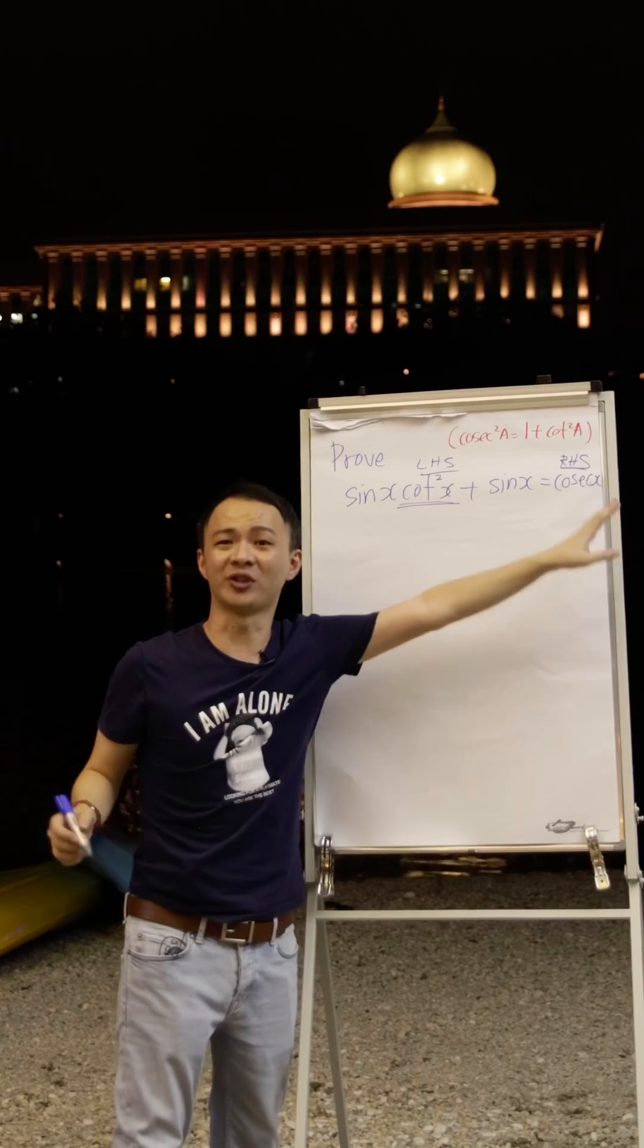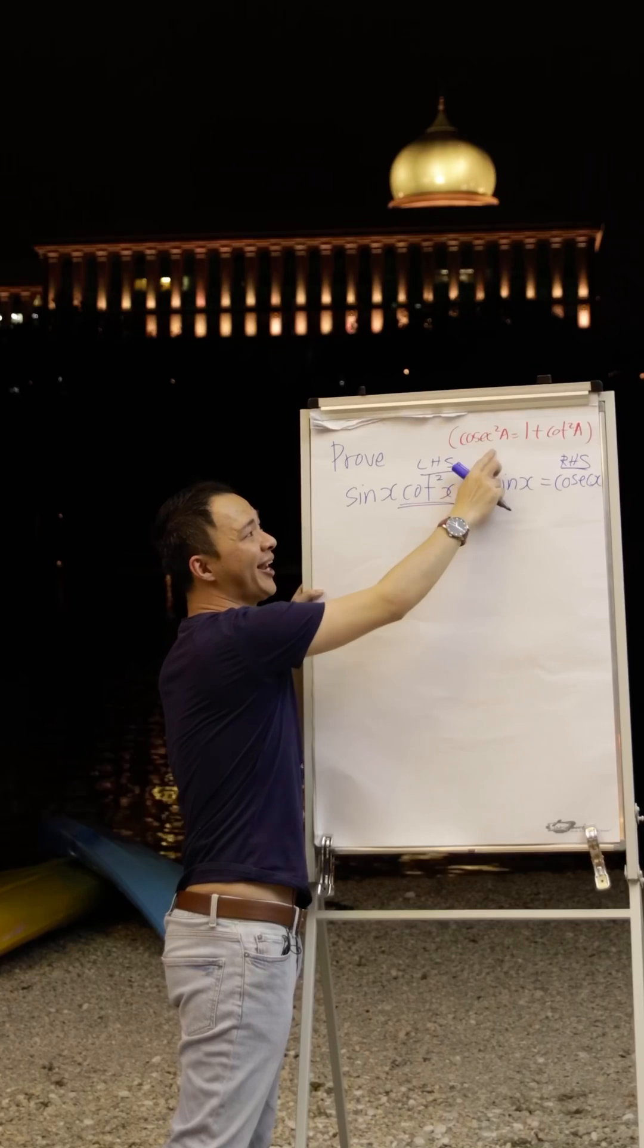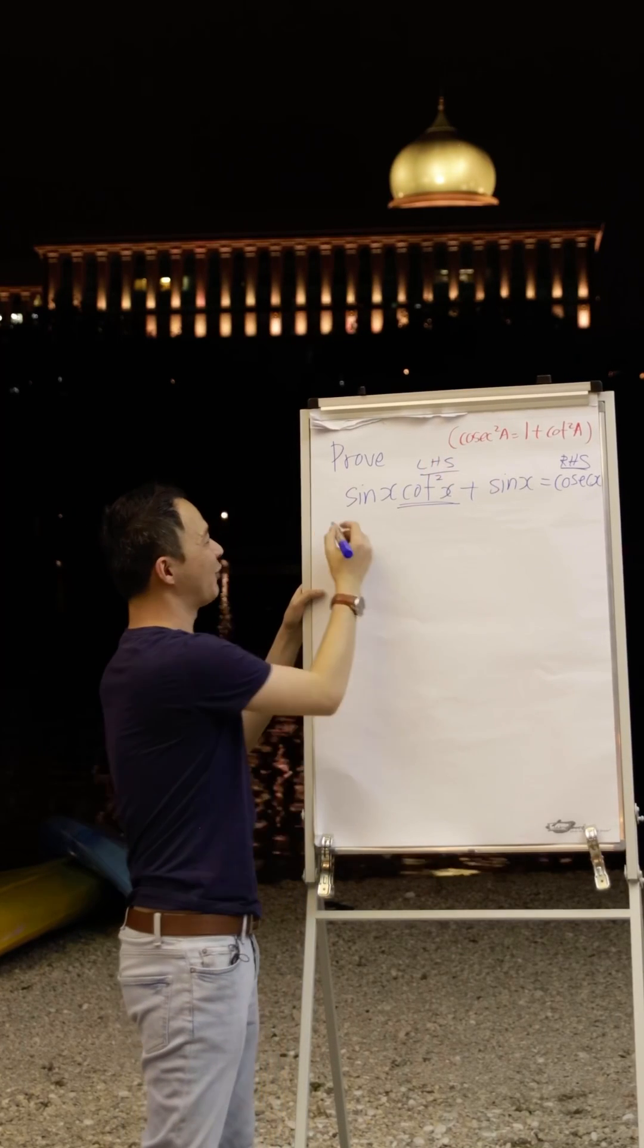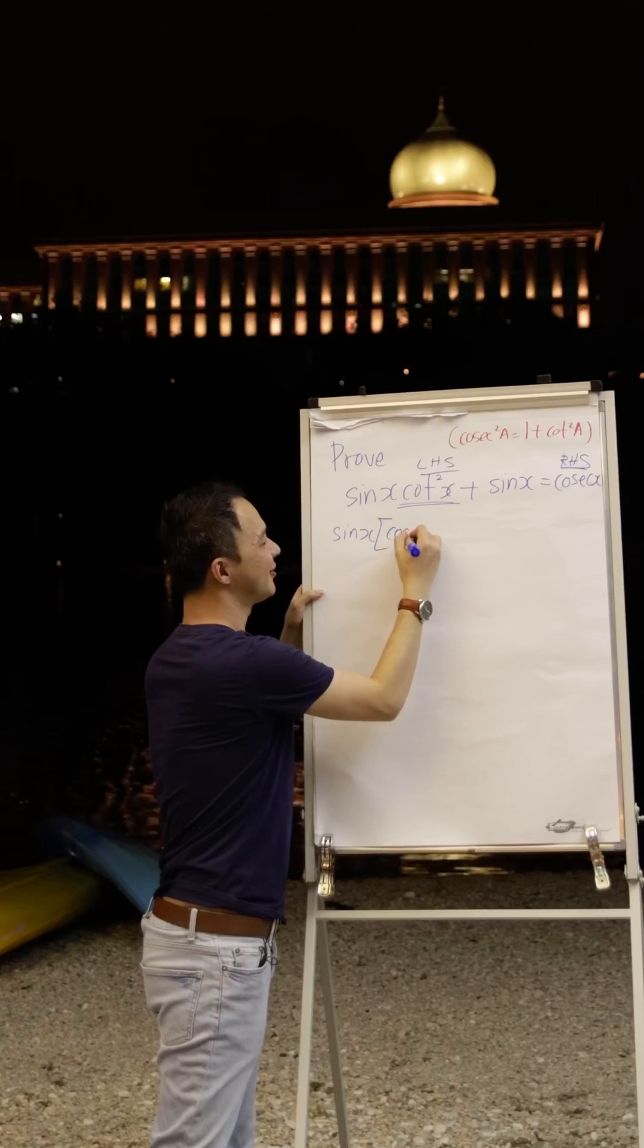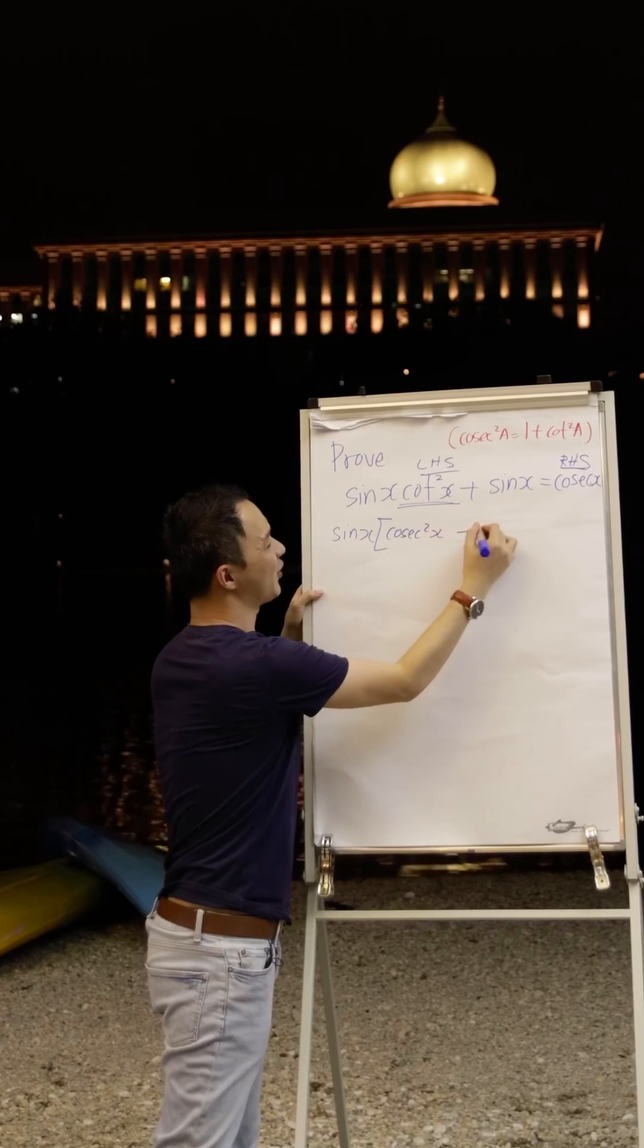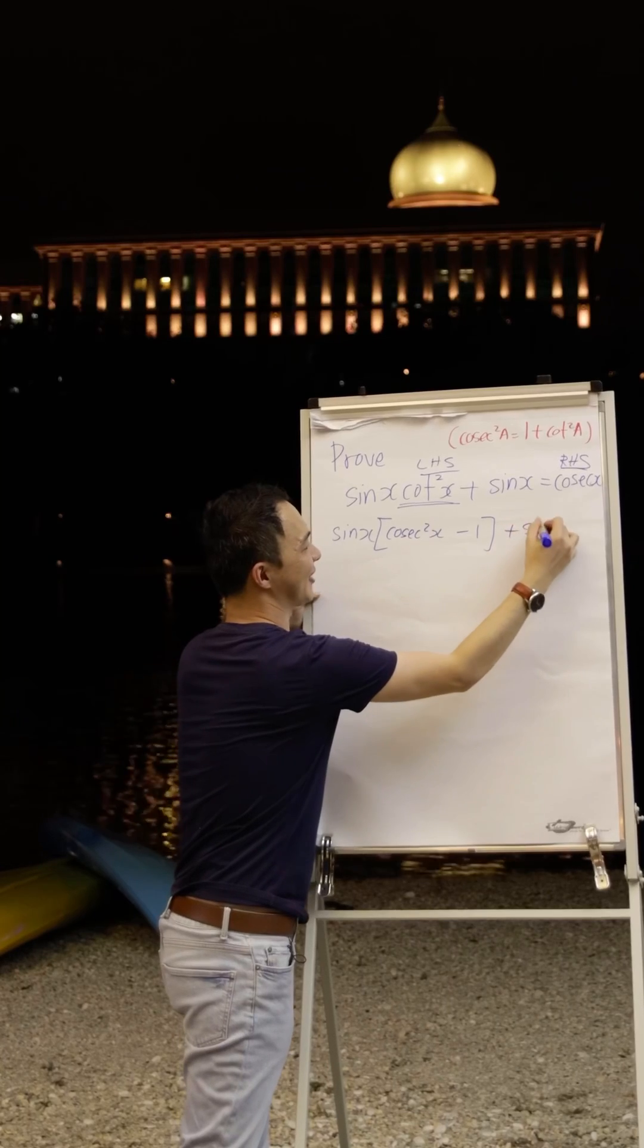So I have a formula for cotangent square x, which is cotangent square x equals to cosecant square x minus 1. So what I will do right now is, I will change it into the cosecant square x minus 1. Because I move the plus 1 to the other side, it will become minus 1, and then plus sine x.